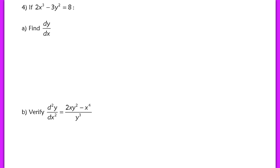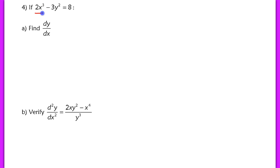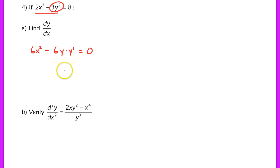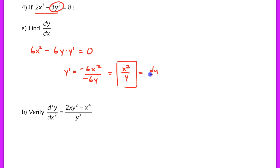Our last example highlights a technique useful for finding the derivative of the derivative. We have an implicit equation and we first find dy/dx. Differentiating the left-hand side gives 6x squared minus 6y times y prime, and the right-hand side is 0. Isolating y prime by moving 6x squared to the right and dividing by negative 6y, we get y prime equals x squared over y.